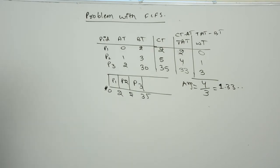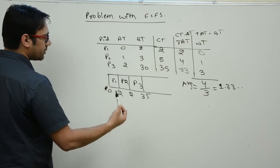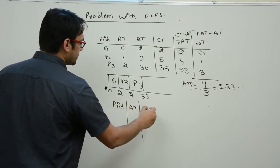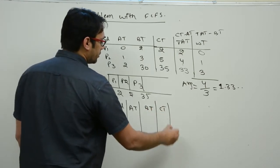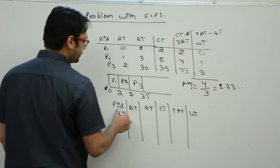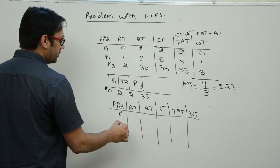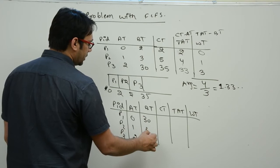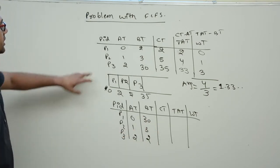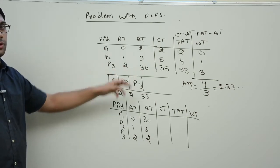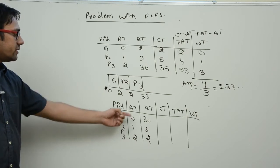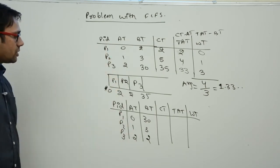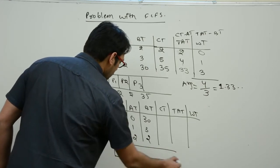Now let us formulate the same problem in a different fashion. Process IDs are again P1, P2, P3; arrival time is 0, 1, 2; but the burst time is now 30, 3, and 2. The only difference is that here process P1 has the highest burst time of 30, whereas in the previous case process P3 had the highest burst time of 30.